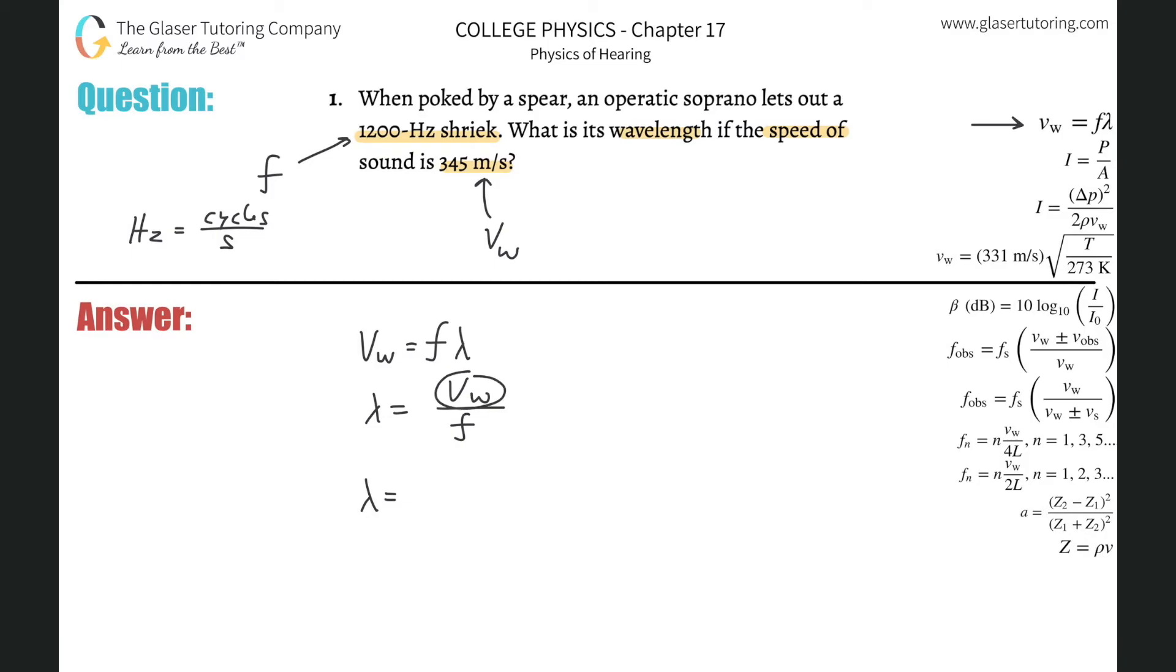Remember standard units for velocity is meters per second, frequency is going to be per second, aka hertz, and we can simply then calculate wavelength, and that will come out of the formula in terms of meters. And that's the traditional unit for distance.